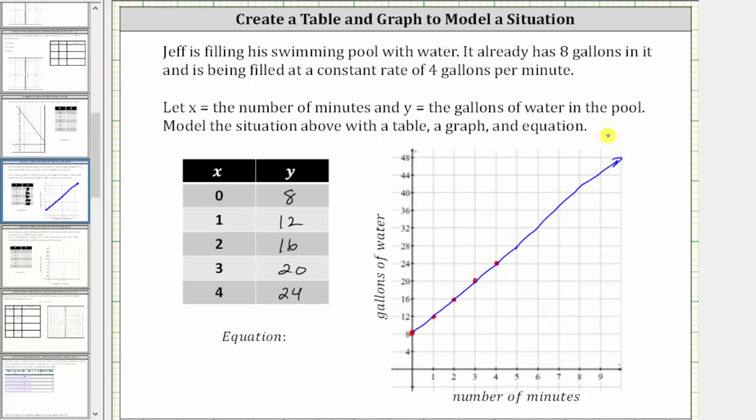Now let's work on determining the equation. We know the starting amount is eight gallons, which corresponds to the vertical intercept. The pool is being filled at a constant rate of four gallons per minute, which we can also see in the table. Notice how the y value is increased by four each time the x value is increased by one.